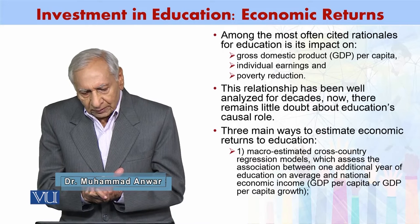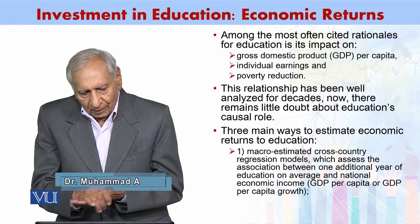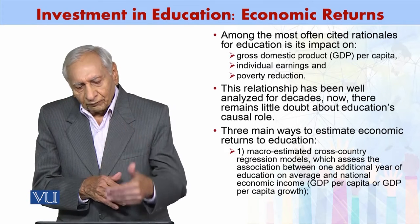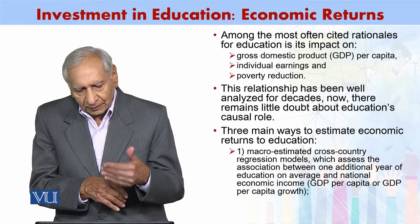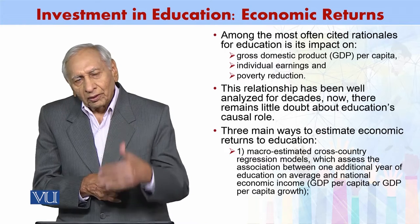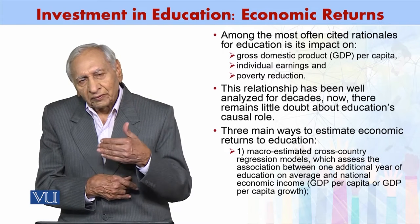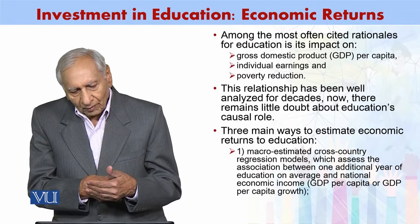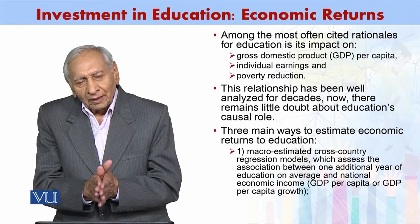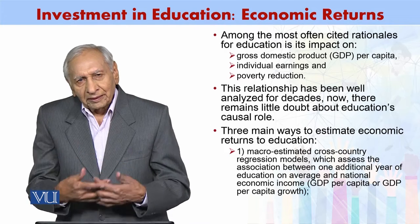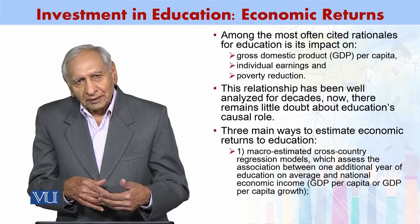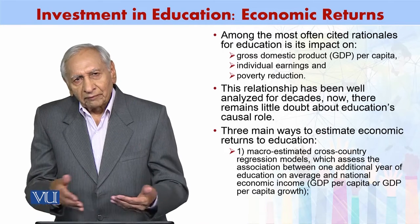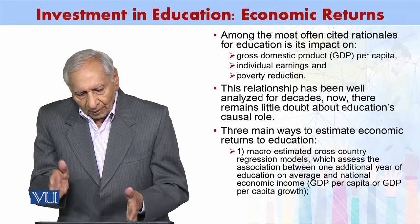That would be seen in terms of gross domestic product. It could be seen in the change in the individual's earnings, or increase in the individual's earnings. We could also see as an outcome that economic return is the poverty reduction, and we could see as an outcome of employment — we expect that on average, poverty reduction.